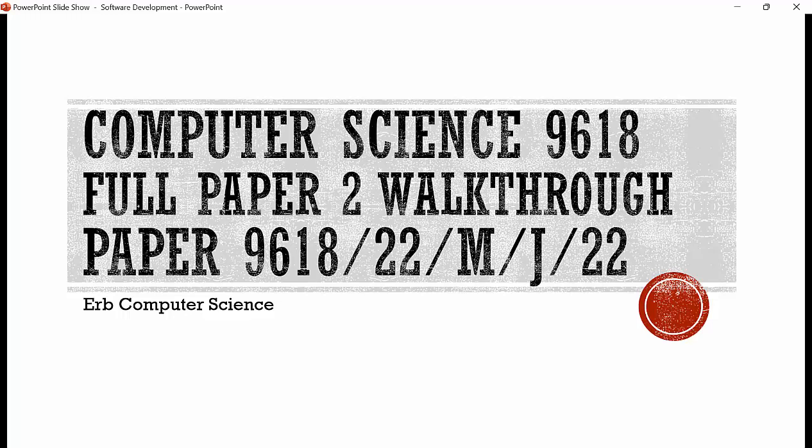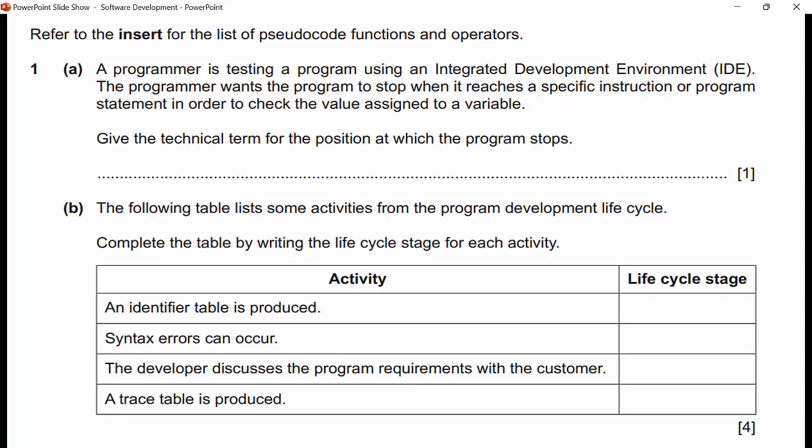Refer to the insert for the list of pseudocode functions and operators. These first few questions are almost free points. A programmer is testing a program using an IDE — this is what we program in if you're using Java, Python, or VB.NET, you program in an integrated development environment. The programmer wants the program to stop at a specific instruction to check the value assigned to a variable. The technical term for when the program stops is a breakpoint. You can set those up in your program.